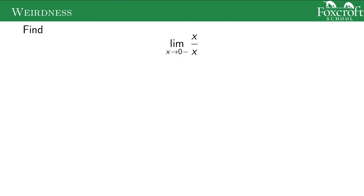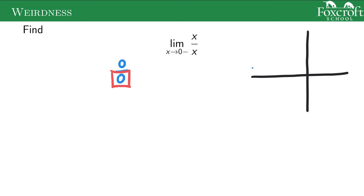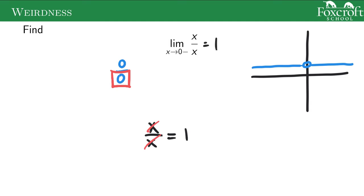Consider x over x. If you try to plug in 0, you get 0 over 0, and dividing by zero is what normally causes asymptotes. But if we graph this function, there's no asymptote. The key thing to remember is it's not just the fact that you're dividing by 0 — it's whether you can simplify the fraction. x over x equals 1, so the limit is just 1, which fills in as a hole rather than an asymptote.